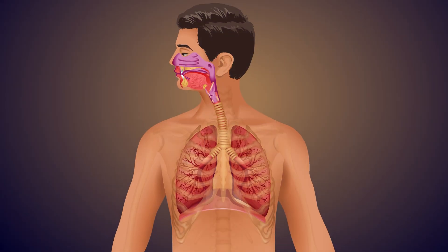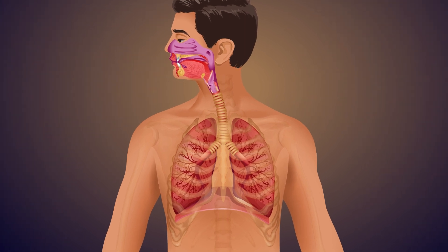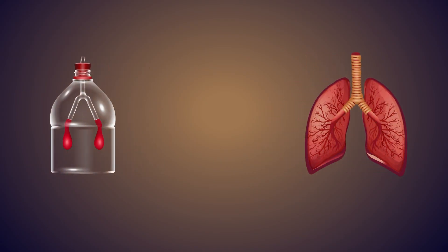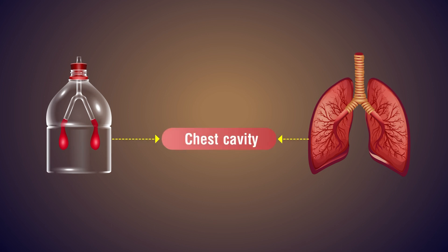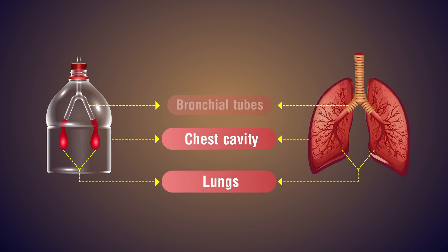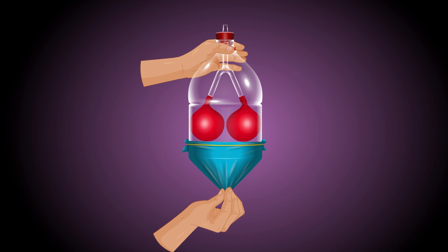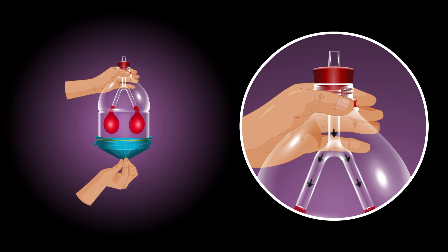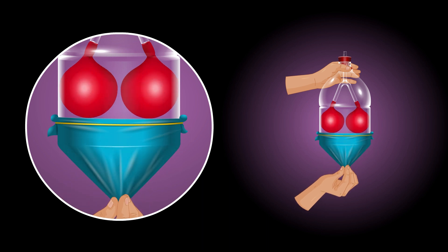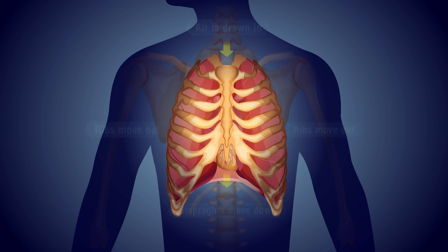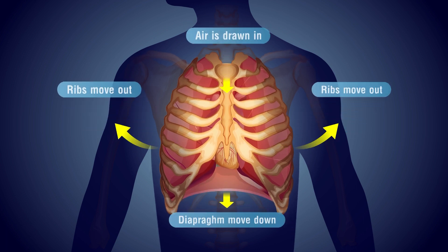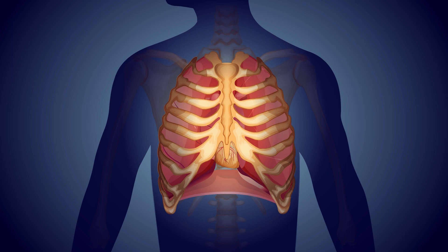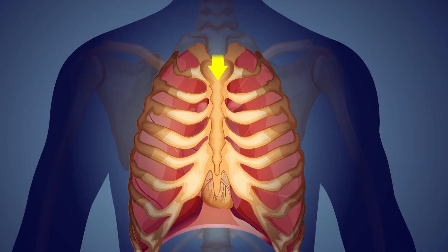Observation: The above experiment represents the human respiratory system. The bottle represents the chest cavity, whereas the balloons and the Y-shaped glass tube represent the lungs and the bronchial tubes. When we pull down the rubber sheet, the bottle gets more space, so air starts to enter inside the bottle through the Y-shaped glass tube and the balloons start to inflate. This explains inhalation — the ribs move upwards, the diaphragm moves down, the chest cavity has more space, and air enters the lungs.